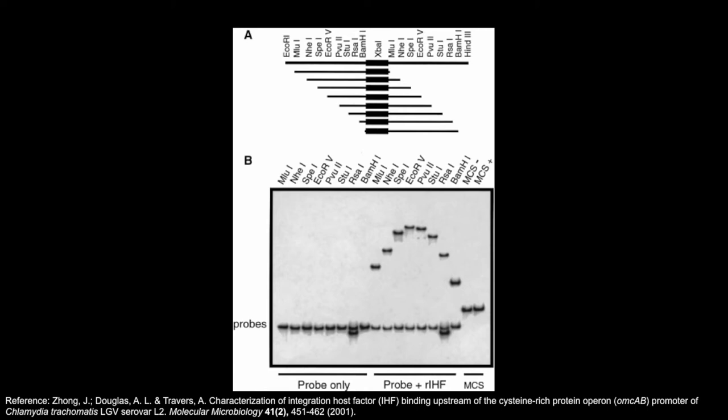In the other set of lanes, the researchers incubated with IHF. As you can see at the bottom, there are some unshifted bands where the DNA did not bind to IHF. However, you can also see shifted bands of all different mobilities. Since we know that DNA fragments are all the same size thanks to our probes-only control lanes, and they are all incubated with the same protein, IHF, we can assume that the differences in electrophoretic mobility are due to DNA bending.